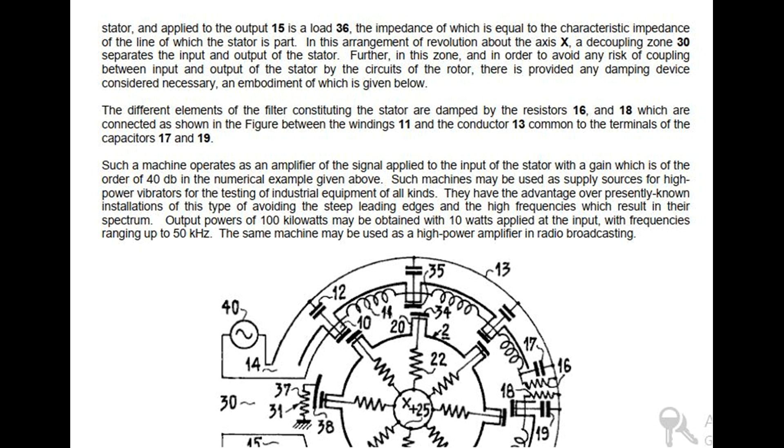Further, in this zone, and in order to avoid any risk of coupling between input and output of the stator by the circuits of the rotor, there is provided any damping device considered necessary, an embodiment of which is given below. The different elements of the filter constituting the stator are damped by the resistors 16 and 18 which are connected as shown in the figure between the windings 11 and the conductor 13 common to the terminals of the capacitors 17 and 19.